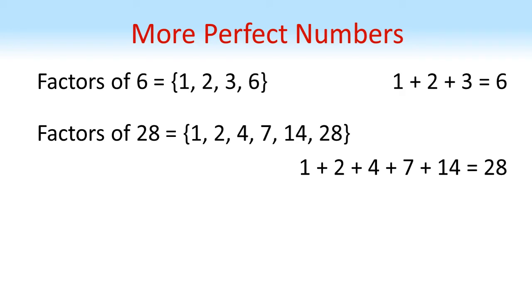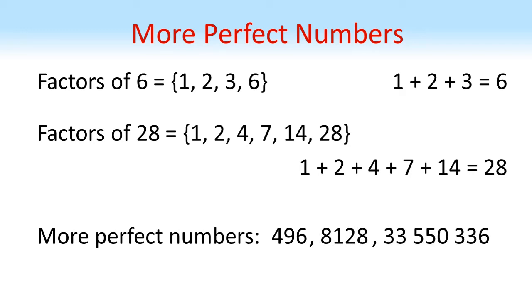Now perfect numbers are very rare. The next one is 496, then 8,128, and the fifth perfect number is a very large 33,550,336.